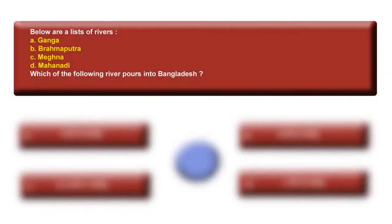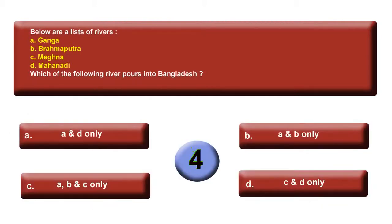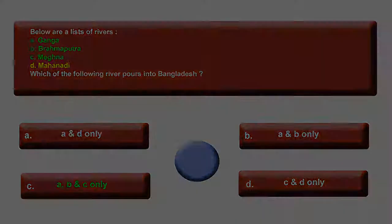Next question: Below are a list of rivers — Ganga, Brahmaputra, Meghana, and Mahanadi. Which of the following rivers pour into Bangladesh? Time is up. The answer is C — A, B, and C only.